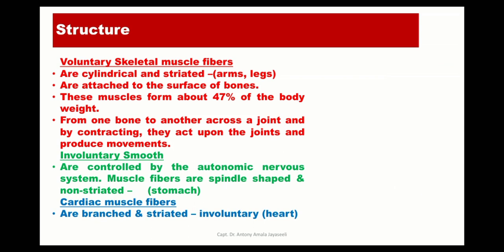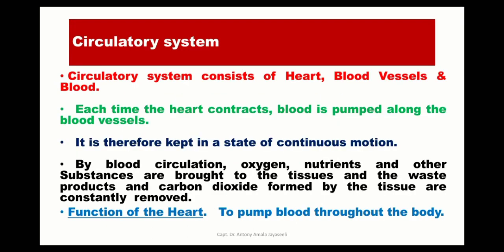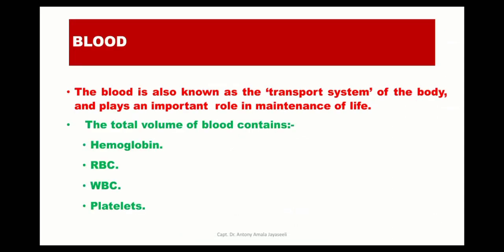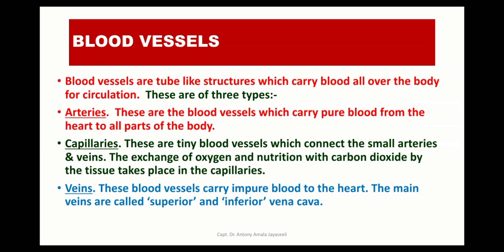Moving on to the circulatory system, it consists of the heart, blood vessels, and blood. The main function of the heart is to pump blood throughout the body, helping to distribute oxygen and nutrients to various tissues and to collect waste products from different parts of the body. The heart is located in the thorax between the lungs. Blood is also known as the transport system. It consists of hemoglobin, RBC, WBC, and platelets. The blood vessels are of three types: arteries, capillaries, and veins.